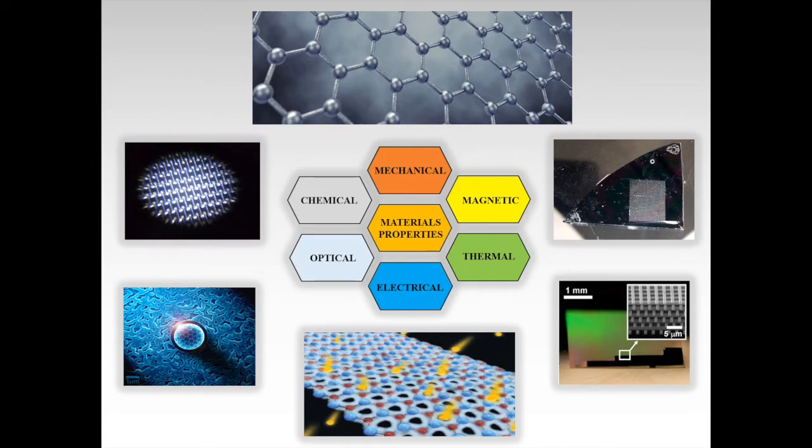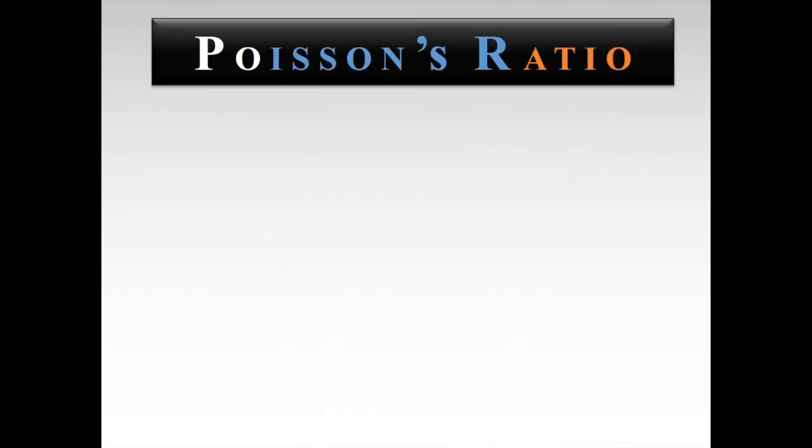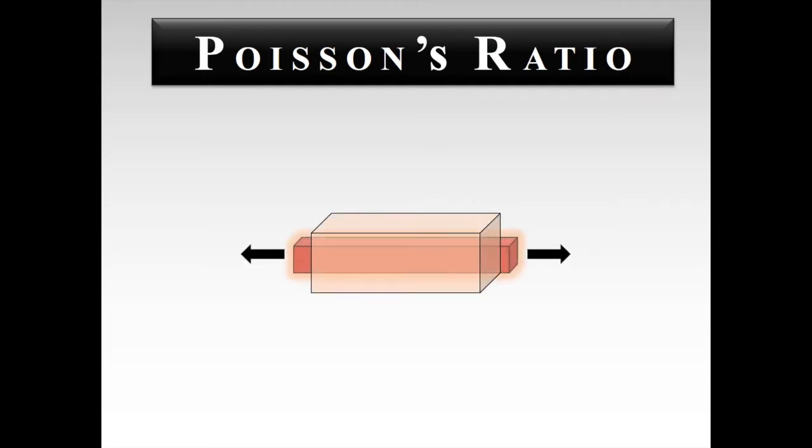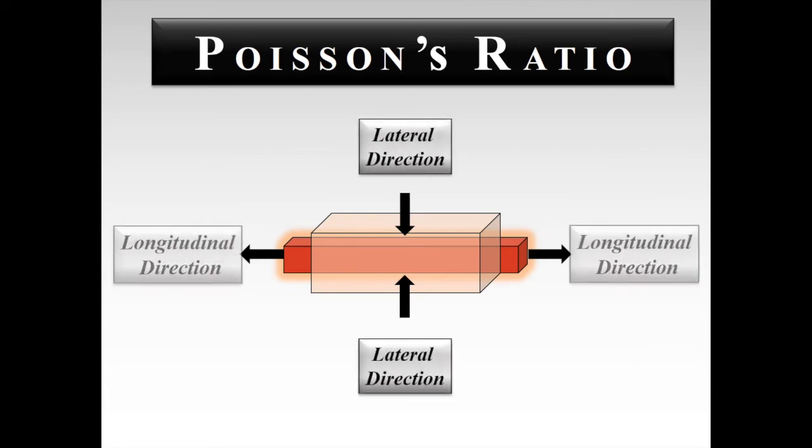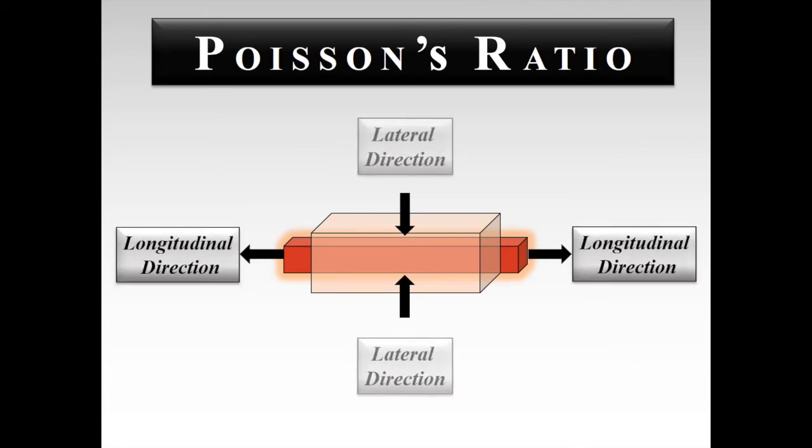The first property we're going to discuss is Poisson's ratio. Consider a rectangular block made up of a conventional material. When we apply force in the longitudinal direction, as a result, it will elongate in the direction of the applied force, but it will contract in the lateral direction. Due to this, we observe the dimensional change in both the lateral as well as the longitudinal direction.